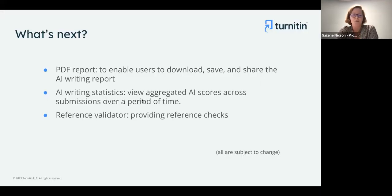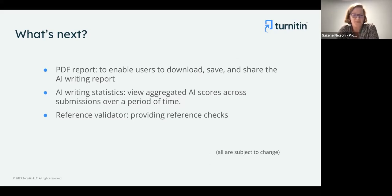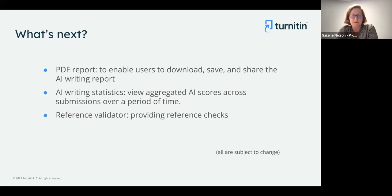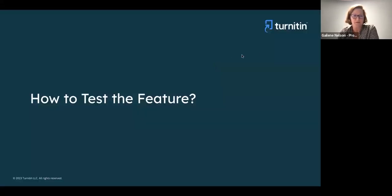Finally, the reference validator: this is a feature we have in exploration right now — the ability to look at references and citations within a document and determine whether they are valid. Future versions will check for valid references. We know that a good portion — probably more than half — of citations delivered through AI writing tools are artificial: they have been generated and are not necessarily even valid links. Our ability to point those out for you would be very helpful.